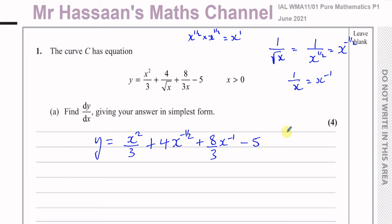This is not differentiated yet — this is just preparing it for differentiation. A common mistake here would be to bring the 3 up as well. The 3 is already in the denominator. It's the X which is to the power of 1 that you write as X to the power of minus 1 on top. You can't bring the 3 up too, because then the 3 would also have to be to the power of minus 1. So it's 8 over 3, X to the power of minus 1, minus 5.